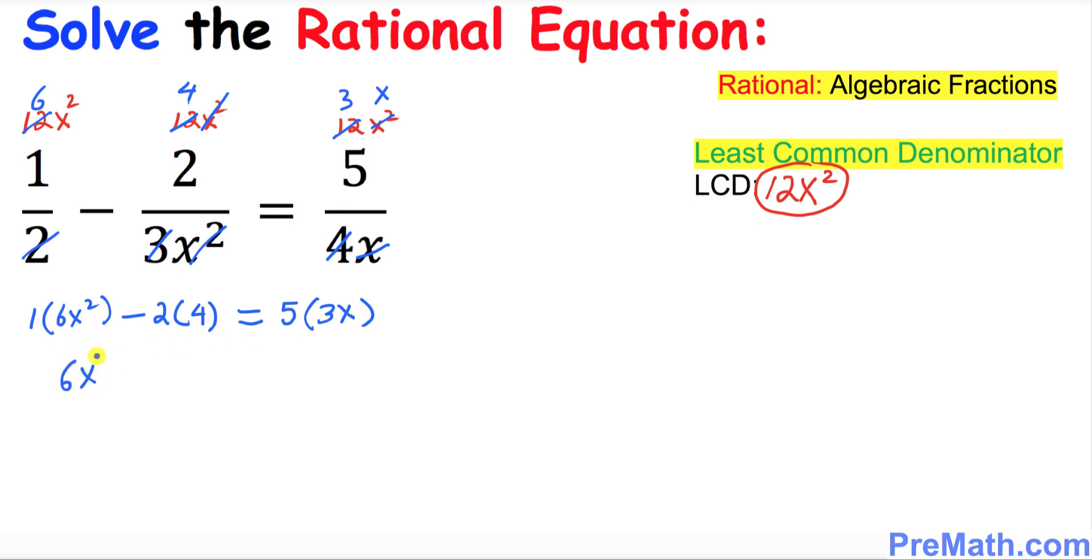Let's simplify this thing. 1 times 6x square is gonna be simply 6x square minus 8 equals to 15x. I want you to move this 15x on this side.